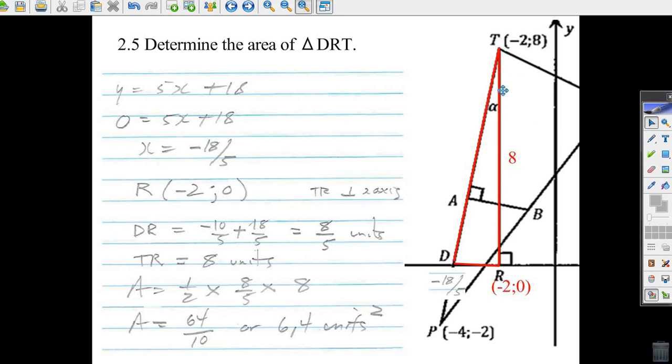Well, how do we find this distance? All we do is subtract. We go minus two minus minus 18 over five and we'll get the distance here. Well, minus two is really minus 10 over five. Minus minus means plus 18 over five. Minus 10 plus 18, that's eight over five units. Well, here we go, that's eight over five units.